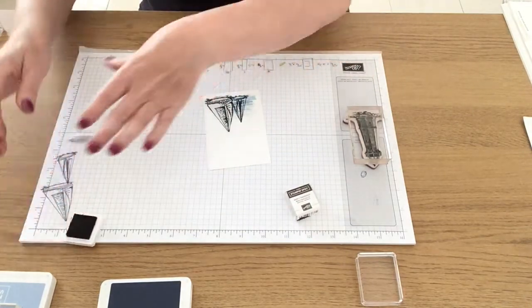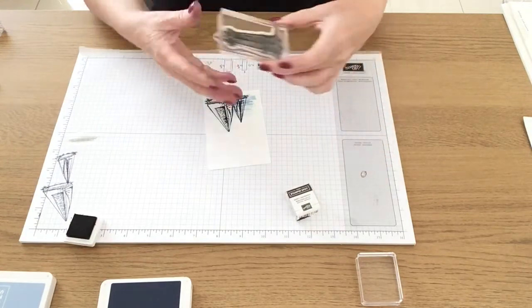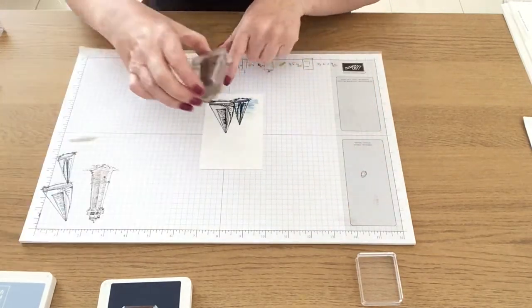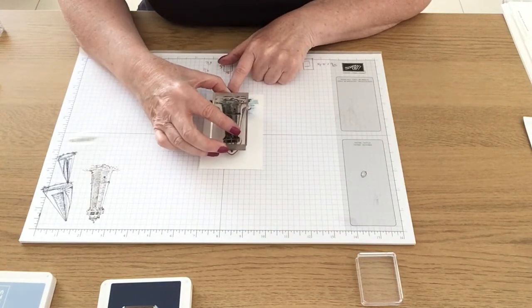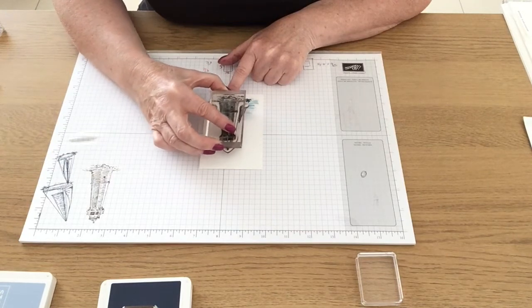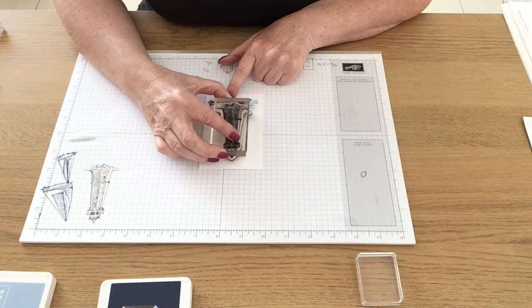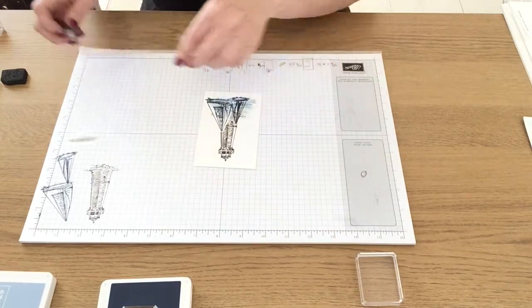Now I'm going to use Early Espresso and I'm going to stamp up the lighthouse. I'm now going to position this over the two boats and because the bigger boat is masked, this will look like the lighthouse is in the background. Okay so that's how that's looking so far.